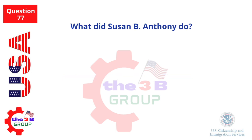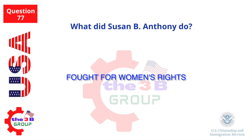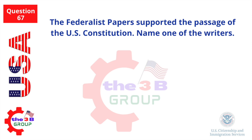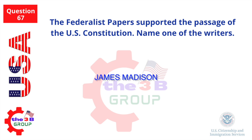What did Susan B. Anthony do? The Federalist Papers supported the passage of the U.S. Constitution — name one of the writers. James Madison.